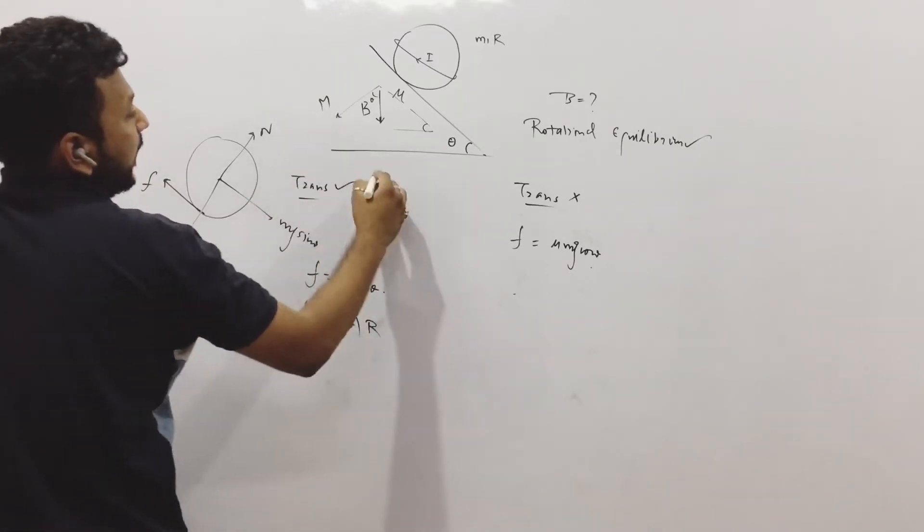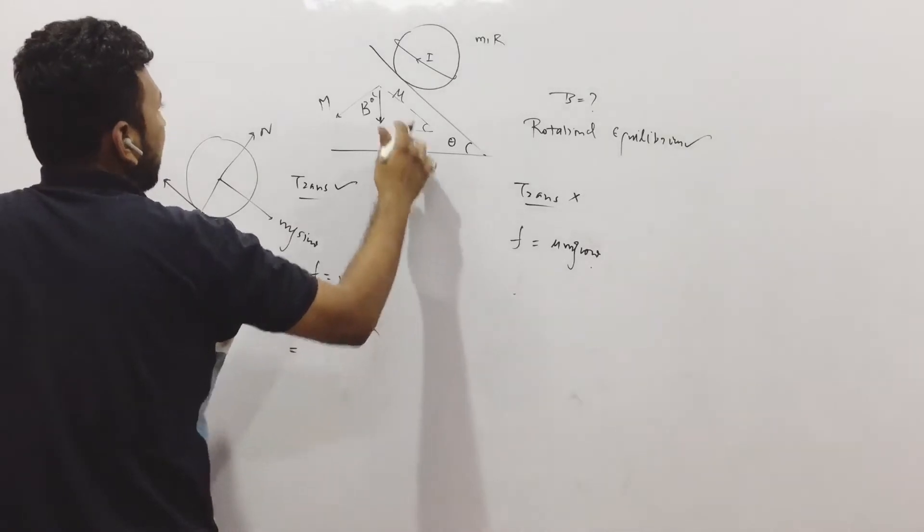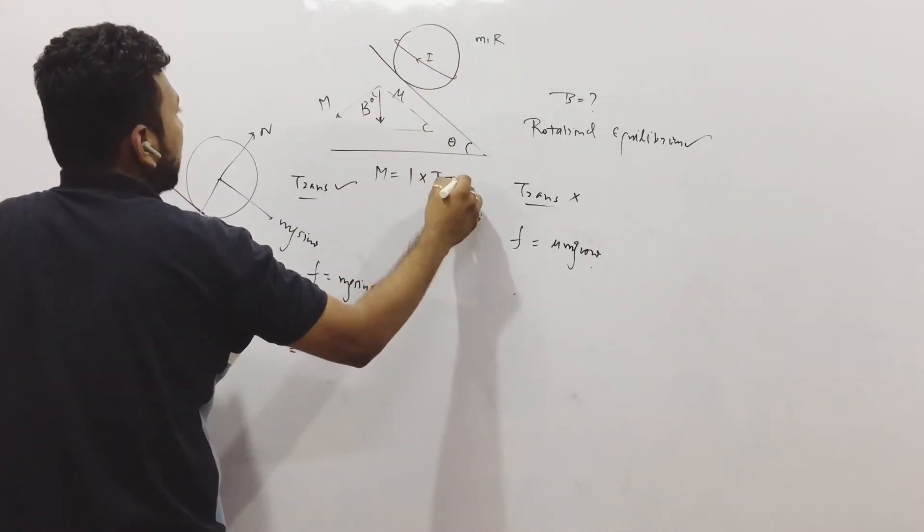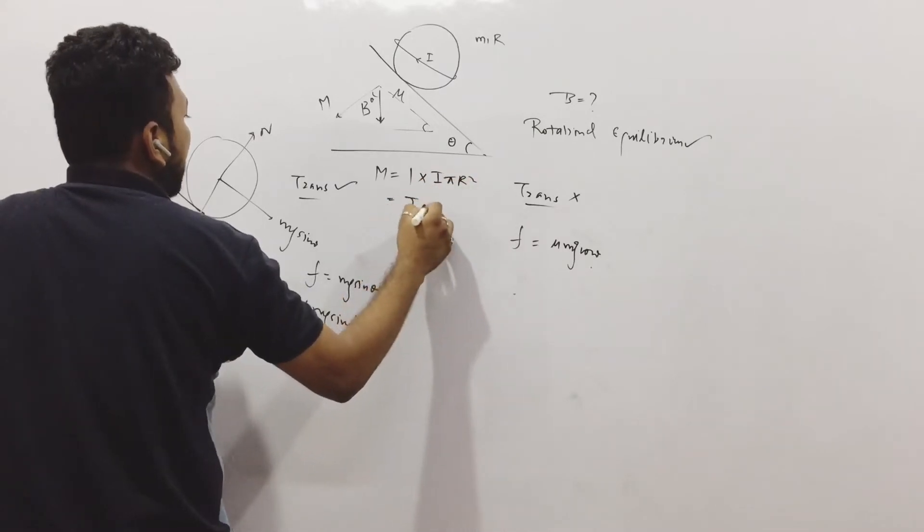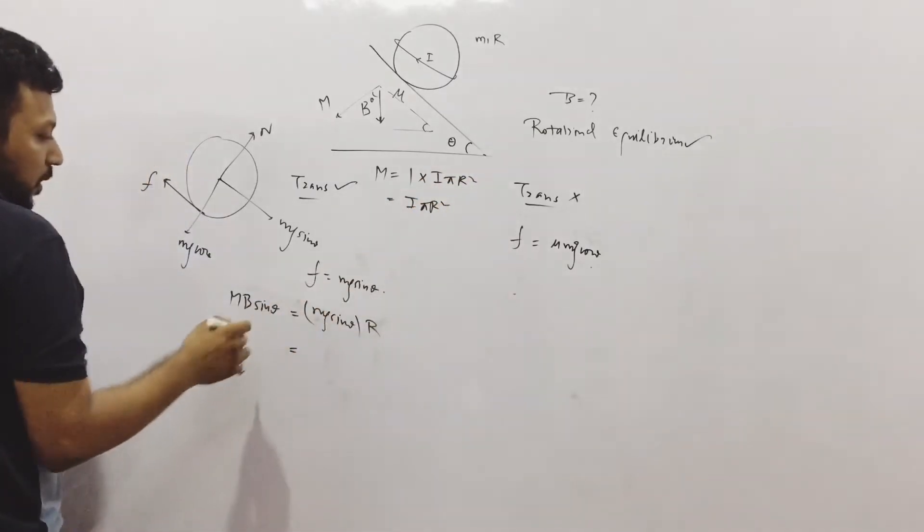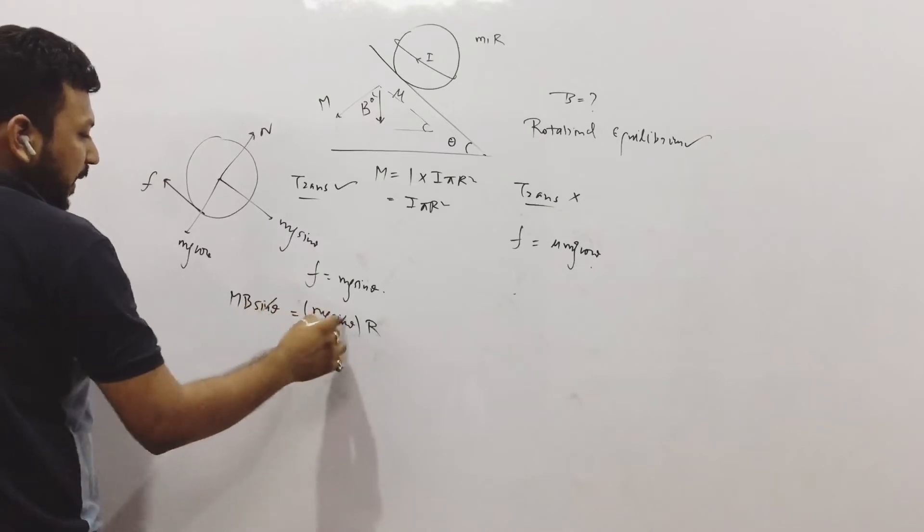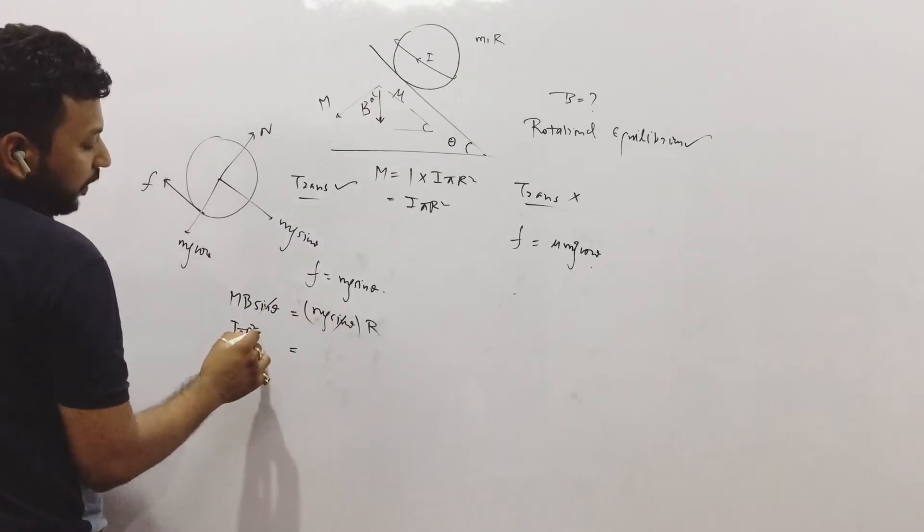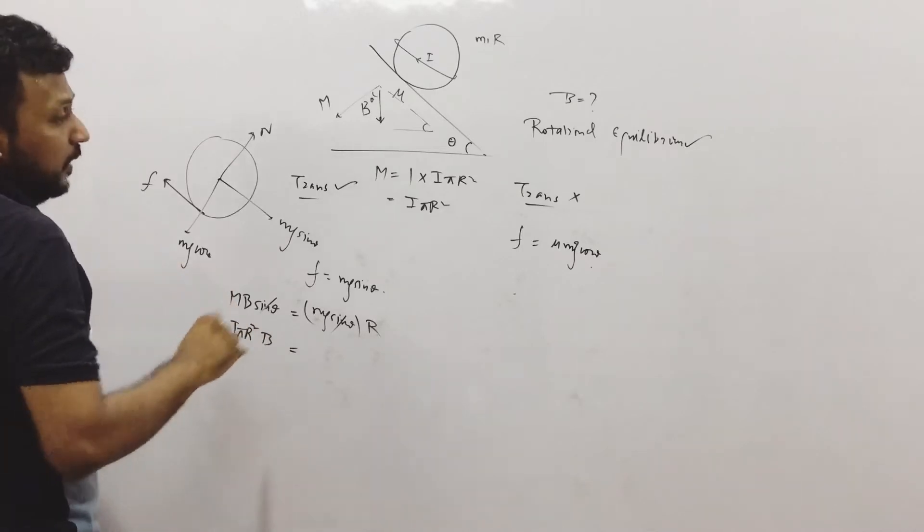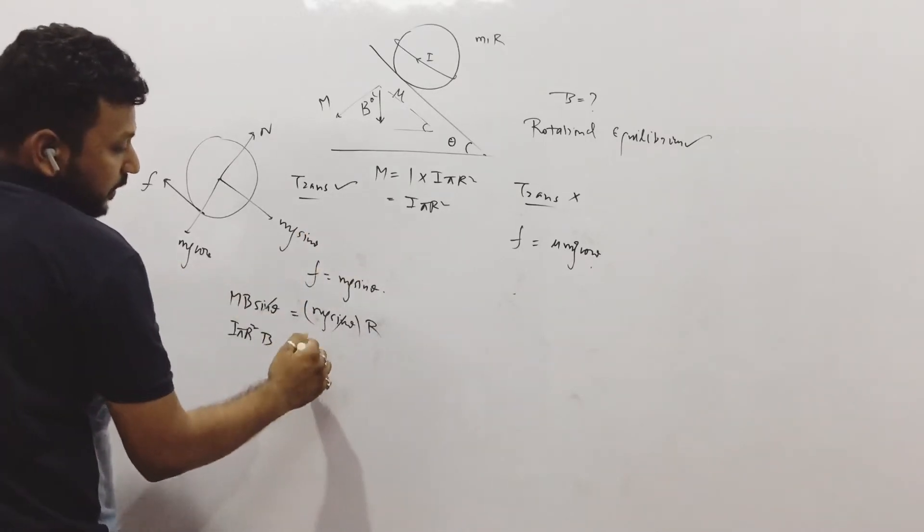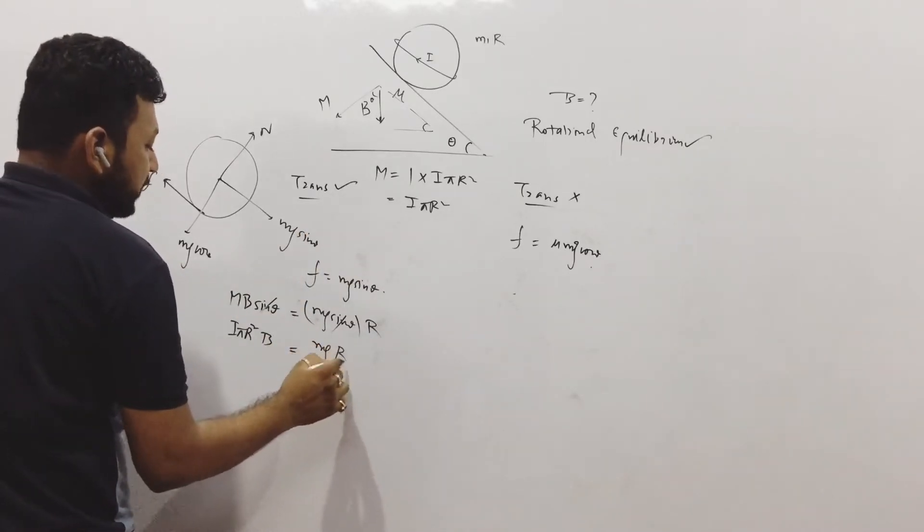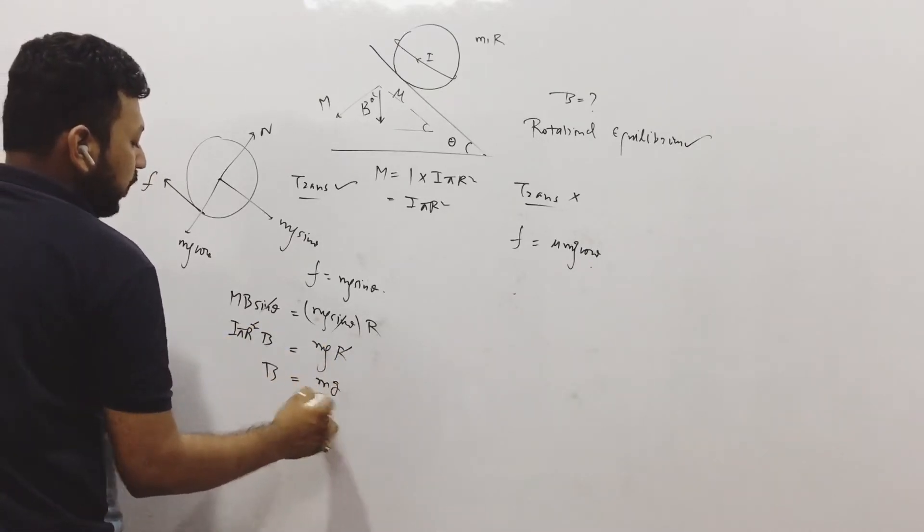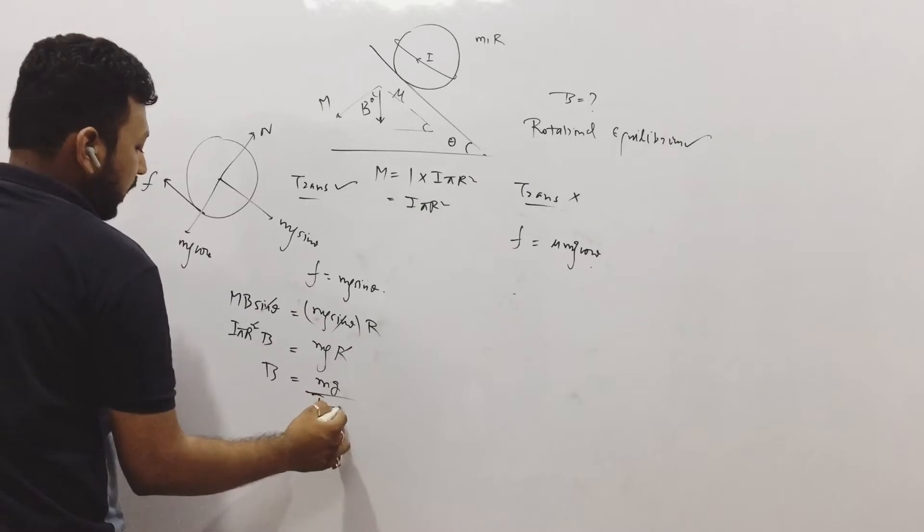What is M? The magnetic moment M will be N I A. There is only one loop, that means N is 1 into I into pi R square. That means simply I pi R square. So we can write, sin theta gets cancelled. It will become I pi R square into B is equal to Mg R.